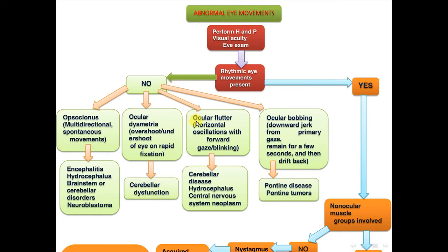Or this may be ocular flutter — horizontal oscillation with forward gaze or blinking — suggesting cerebellar disease, hydrocephalus, or central nervous system neoplasm. Or it may be ocular bobbing — a downward jerk from primary gaze, remaining for a few seconds and then drifting back — indicating pontine disease or pontine tumor.